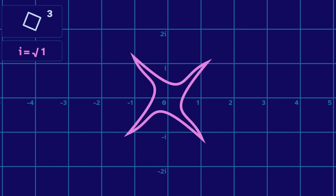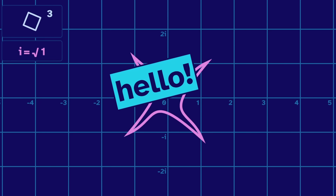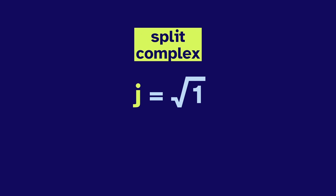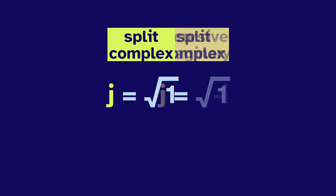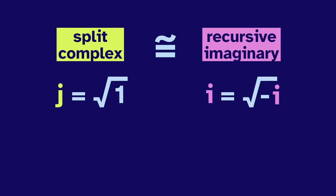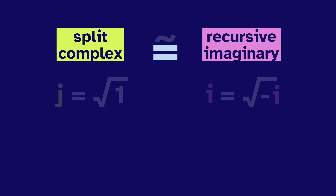If you're a new viewer, hello! Last time we talked about the split-complex numbers, which have j as the root of one. It turns out the split-complex are squ-equal to the recursive imaginary. Mathematicians use this squiggly equal sign to say that two systems are the same in every meaningful way, but technically defined differently. You shouldn't say they're equal because they're not exactly the same — that just wouldn't be correct.